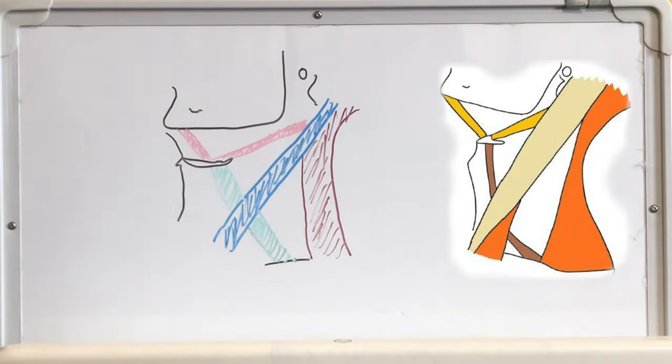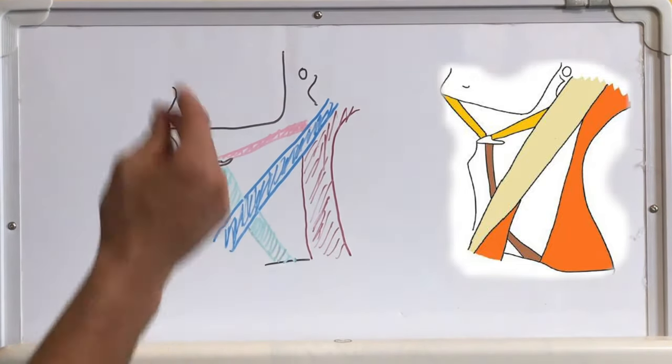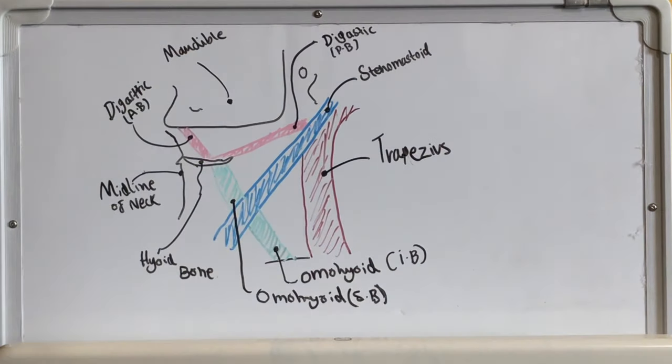From here we can already observe triangles forming and can easily work out their boundaries using this diagram. Try to familiarize yourself with the labeled version of this diagram too.